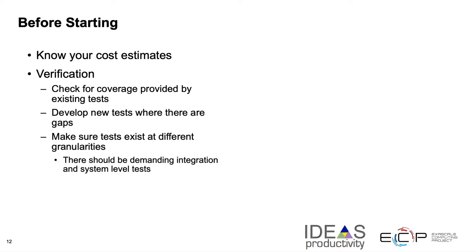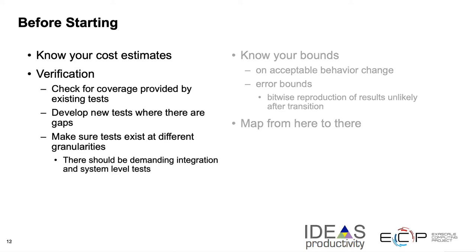You should make sure that tests exist at different granularities. There should definitely be demanding integration and system-level tests — by demanding, I mean tests that should fail easily if the behavior is not as expected after refactoring. These tests should not be very forgiving of changes, which means that for any small perturbation, these tests should fail if that perturbation is not part of the acceptable behavior. Before embarking on code changes, one should absolutely know the bounds — how much behavior change is acceptable.